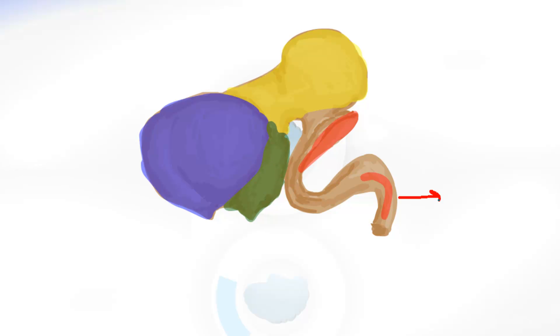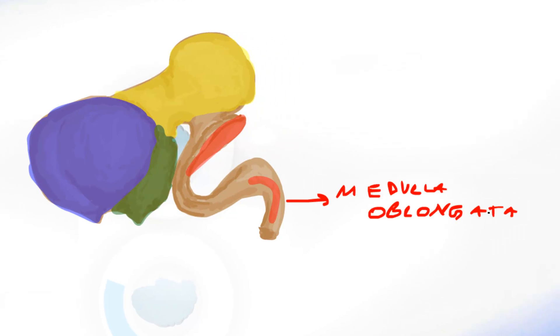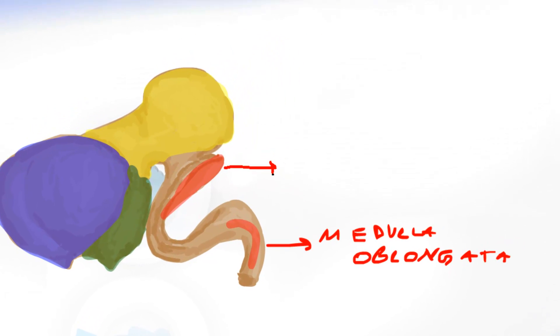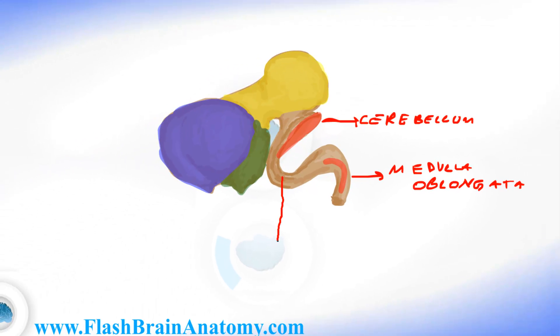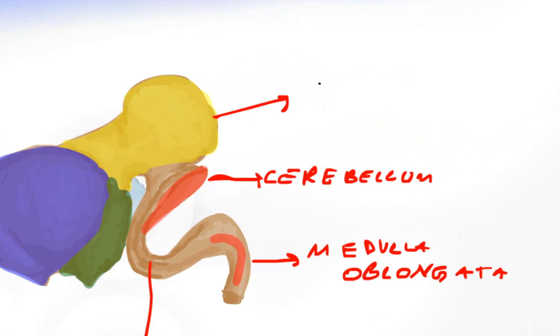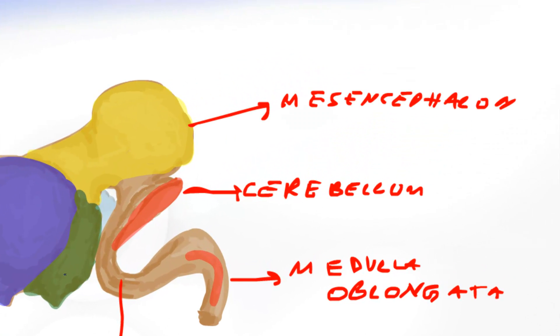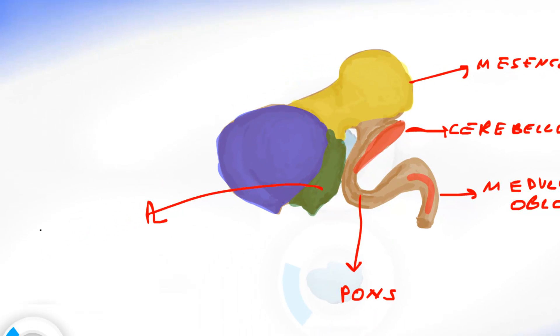Now let's write all this. This was the medulla oblongata. Then this was the cerebellum. And this over here is the pons. The mesencephalon. The diencephalon. The telencephalon.